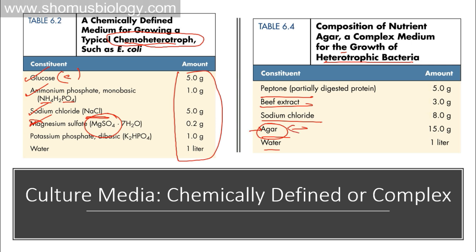Agar provides solid support and is a separate consideration from the broth components. In the broth itself, peptone is a partially digested protein, and beef extract contains a lot of carbon, nitrogen, and phosphorus sources — many sources are present inside. Sodium chloride is also given as a sodium and chloride source. All those individual chemicals like magnesium sulfate, potassium sulfate, and ammonium phosphate are not required when you use peptone and beef extract, because they compensate for all the salts. Carbon, nitrogen, phosphate, sulfur — everything is present inside. That is the idea of a complex medium.